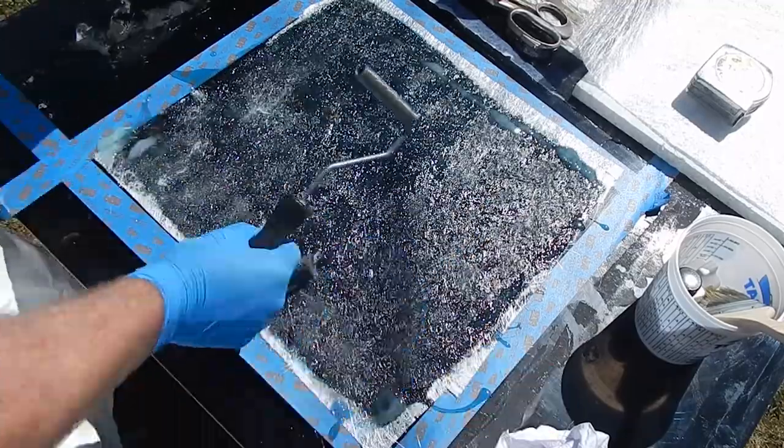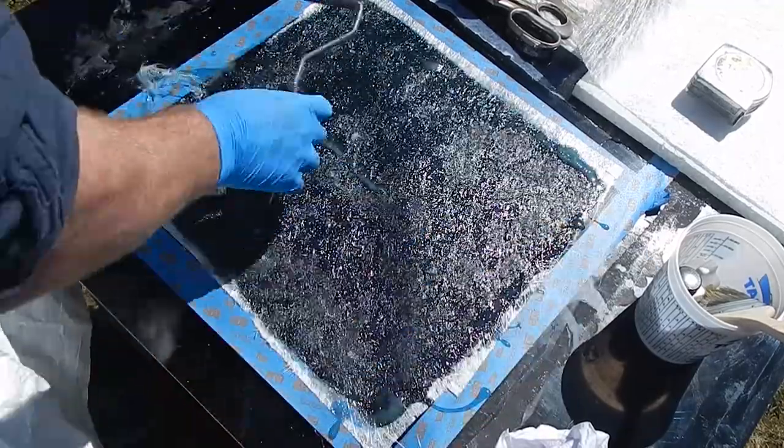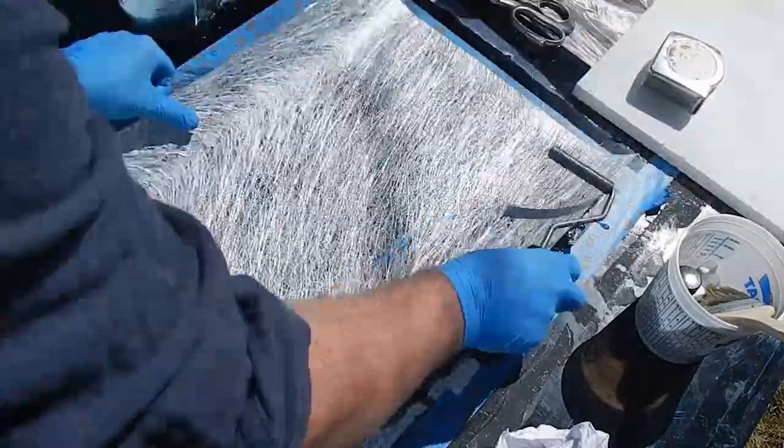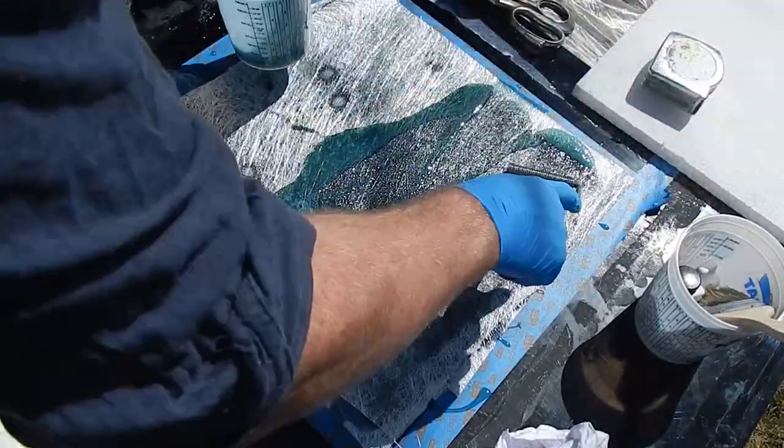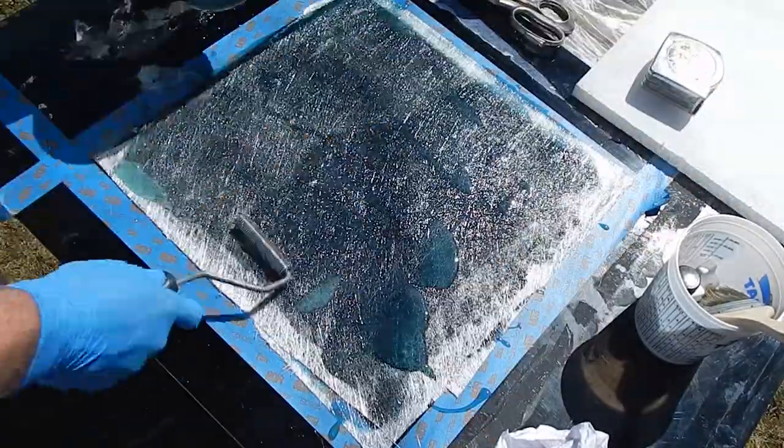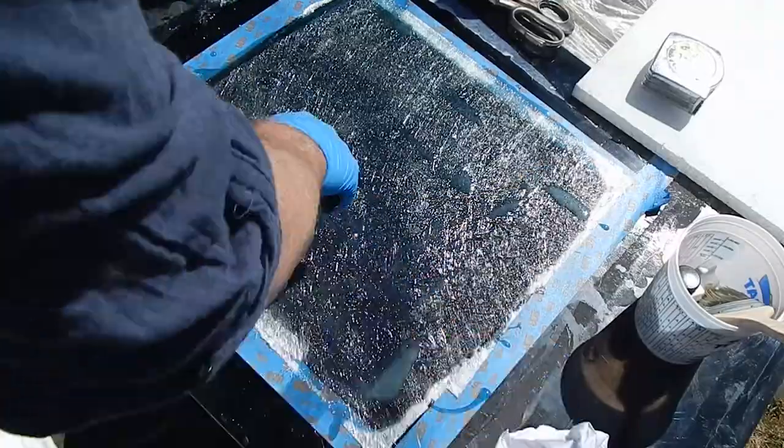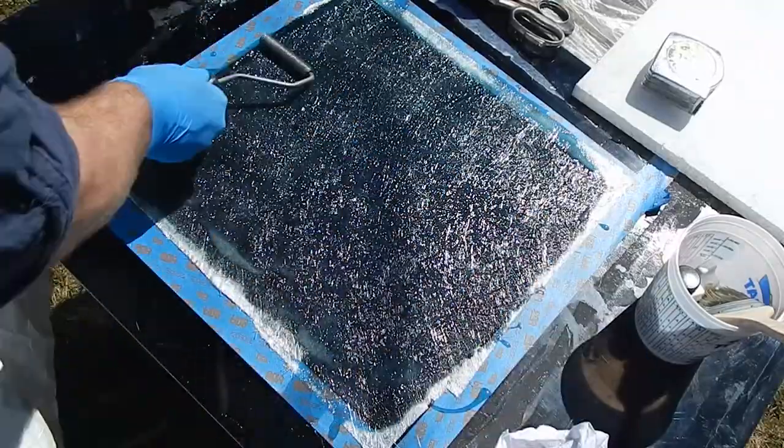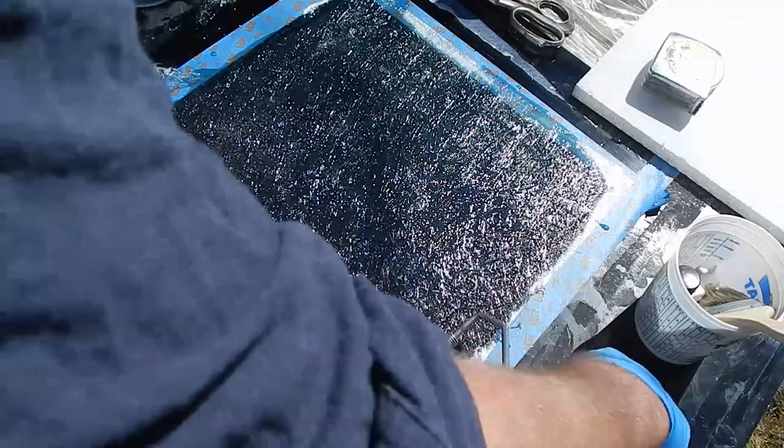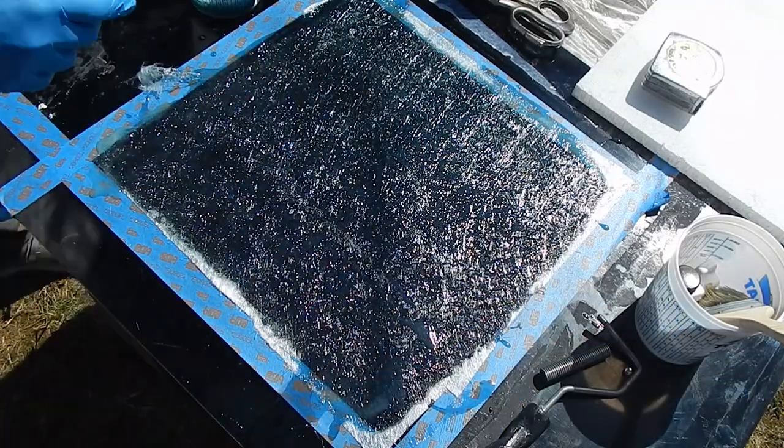There's some nasty chunks of glass I had to pull out. This is one ounce chop strand mat and a general purpose polyester laminating resin. And my wet out roller came apart just at the last minute there.